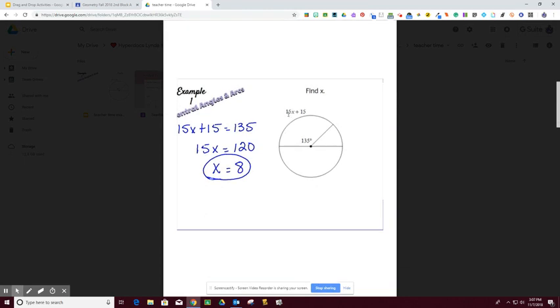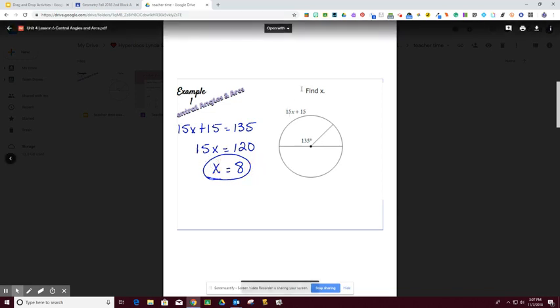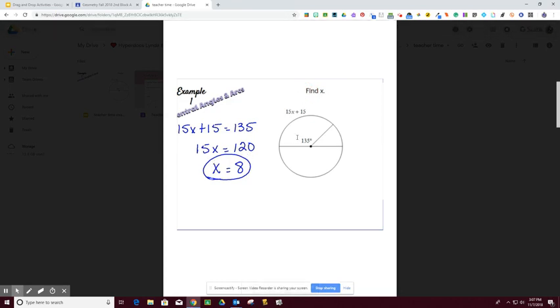In the first example, we need to find the value of X. A central angle is from the center of the circle. This point represents the center, so this central angle is 135 degrees. That means this arc, represented by 15X + 5, is equal to 135. Setting up the equation and solving: subtract 5 from both sides, divide by 15, giving X = 8. We're looking for X, so we're done. Central angles are equal to their intercepted arcs.